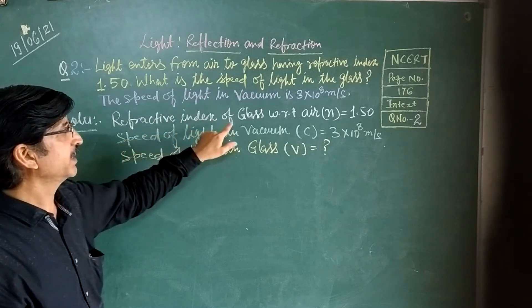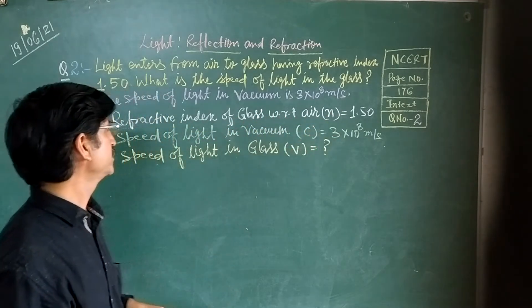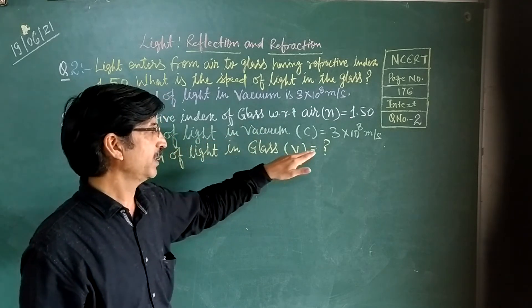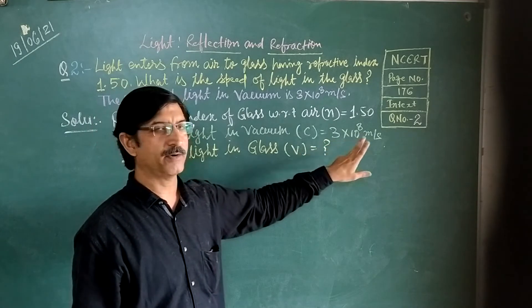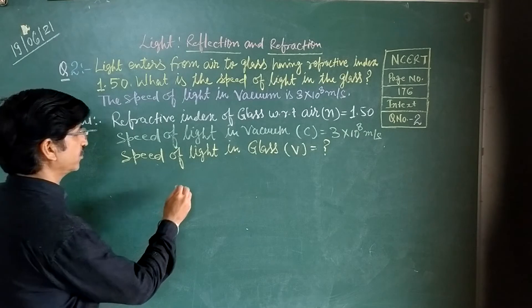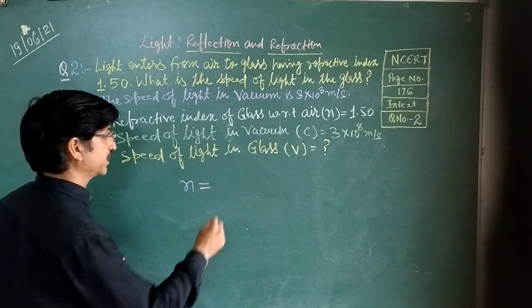Speed of light in glass with respect to air is 1.50. Speed of light in vacuum or air is the well-known value 3×10^8 meters per second. The refractive index formula is n = c/v, where n is the absolute refractive index.